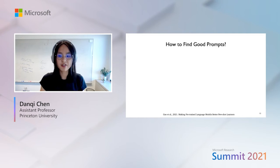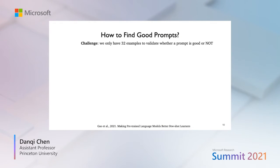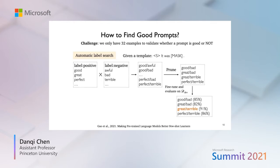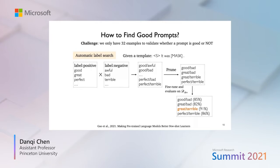The next key question is how to find good prompts. A major challenge is that since we only have 32 or very few training examples, validating whether a prompt is good is very difficult. In our paper, we proposed two strategies: automatic label search and automatic template search. The automatic label search is essentially a brute-force search with pruning, enumerating all combinations and finding the best one evaluated on a small number of training examples.